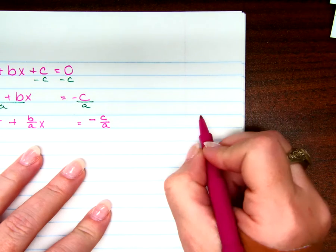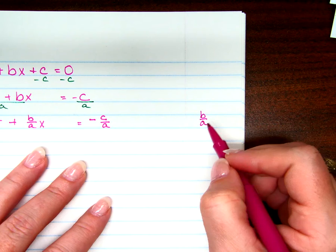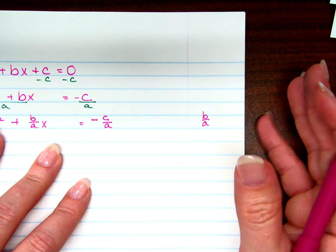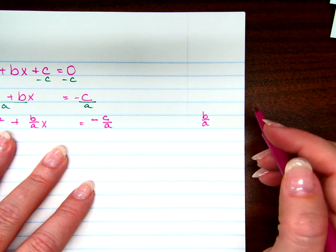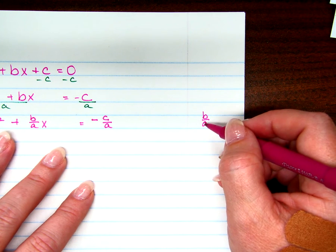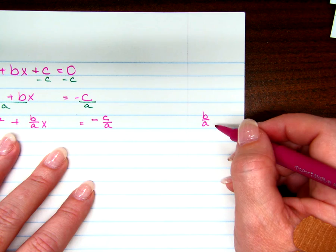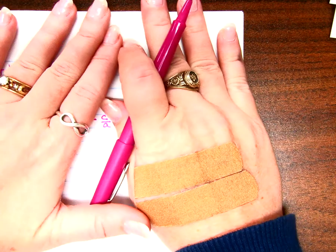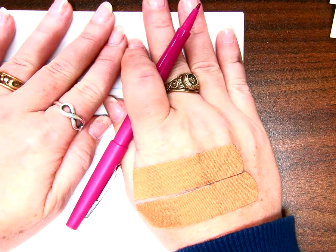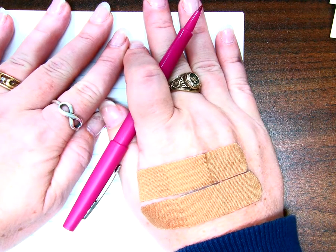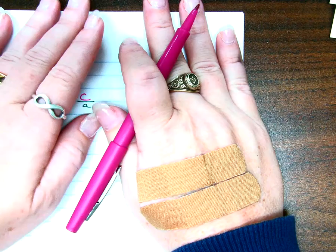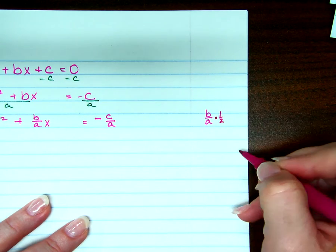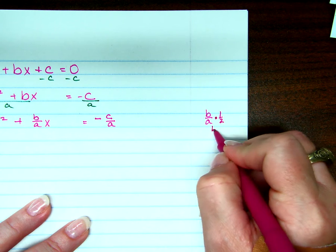I'm going to come over to the side and do some work real quick, because I don't like dividing fractions by a number. Dividing by two is the same as multiplying by one half. Think about it — what is ten divided by two? What's half of ten? Dividing by two is the same thing as multiplying by one half. So let's multiply this by one half. What do I get? b over 2a.